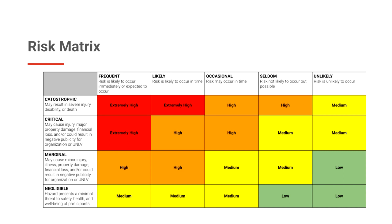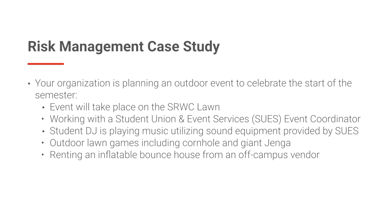For example, based on this chart, if you identify that the likelihood of a negative outcome falls in the seldom category and the severity of potential negative outcomes is marginal, then your level of risk is medium. However, if the potential likelihood was frequent while the potential negative outcomes were critical, the matrix identifies your risk as extremely high. High-risk activities should be avoided whenever possible. For medium and low-risk events, methods to mitigate those risks should be identified and implemented.